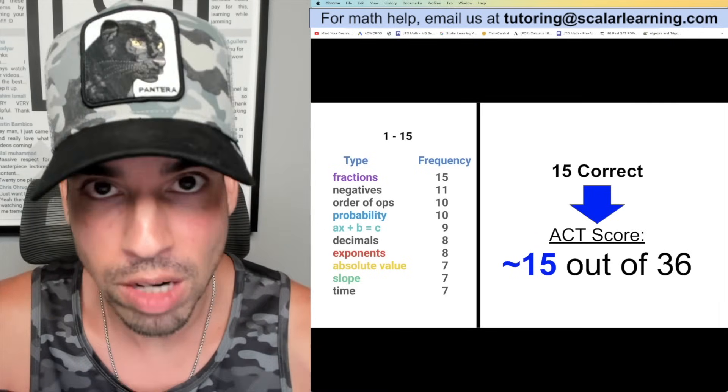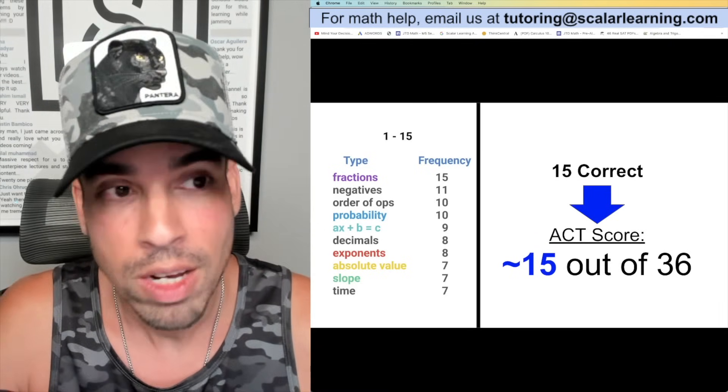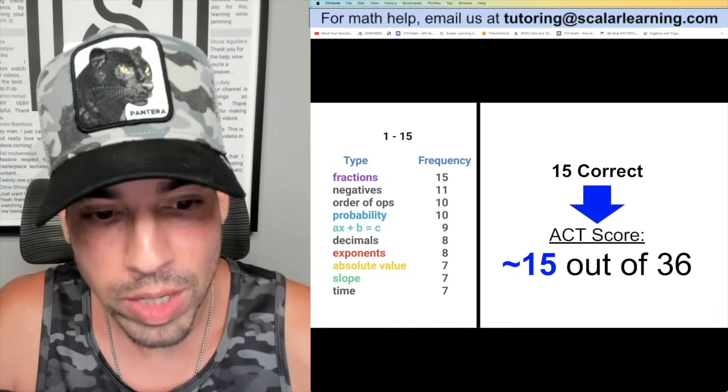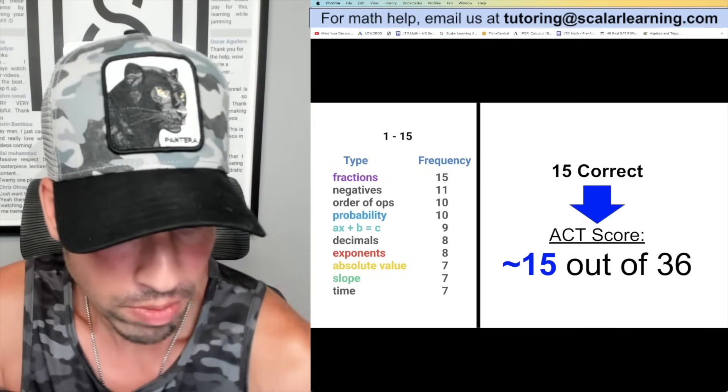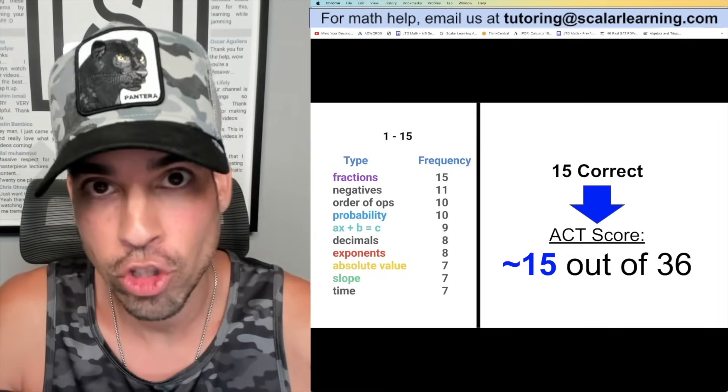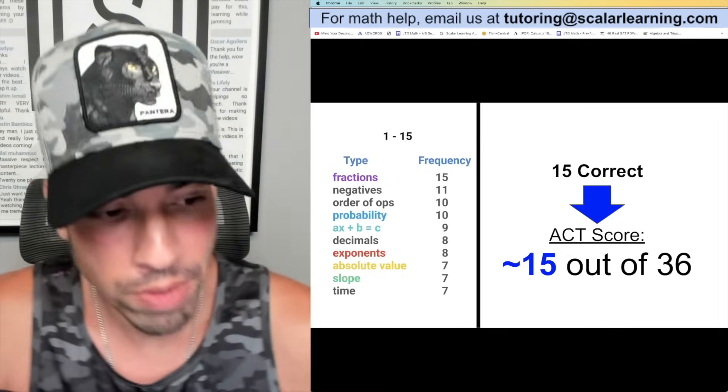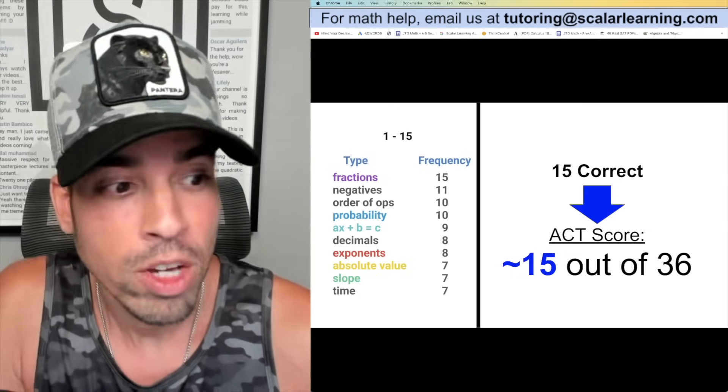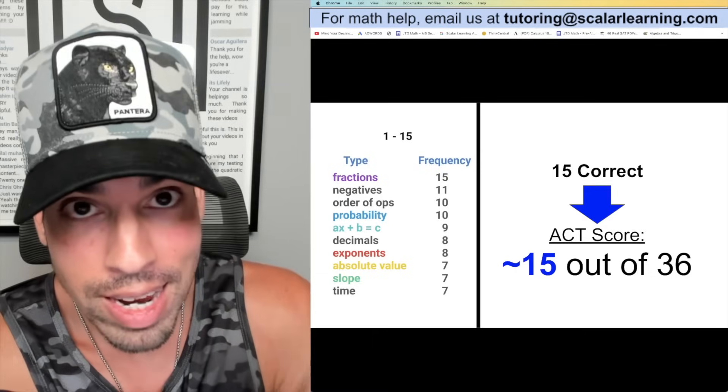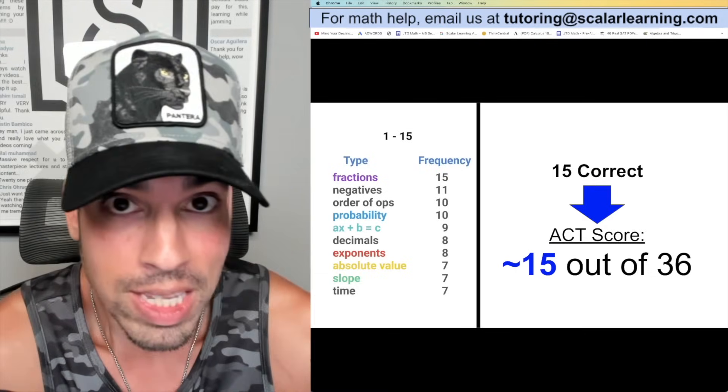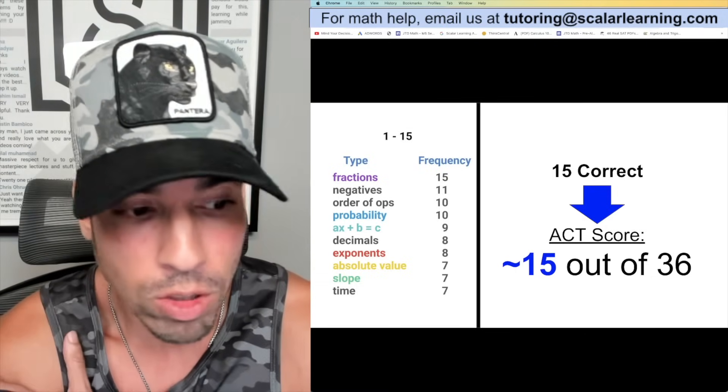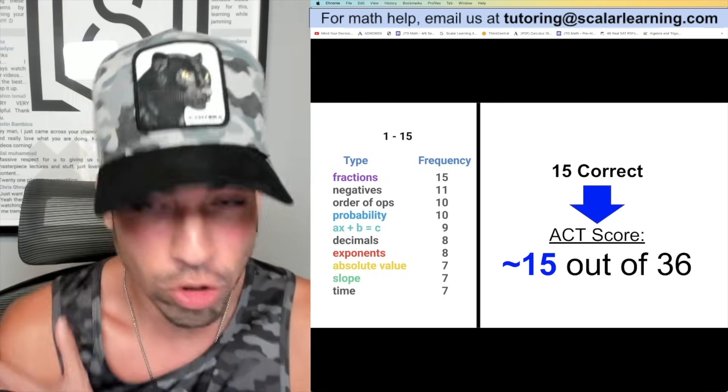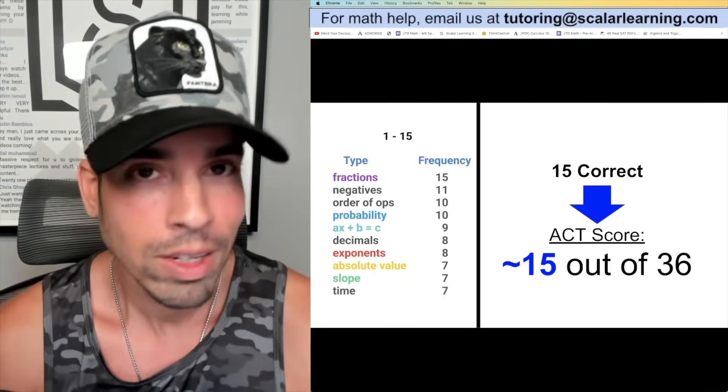If you get 15 correct on the ACT, this is approximately a 15 score. If you're shooting for 15 or 16, somewhere in this zone, you've got to make sure that you're nailing 1 through 15 because they're going to be the easiest questions on the test. If you can knock out all 15 in a row and get those right, you're kind of good to go.